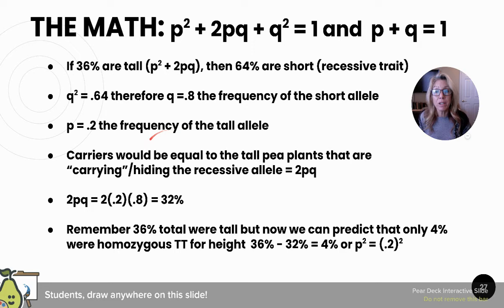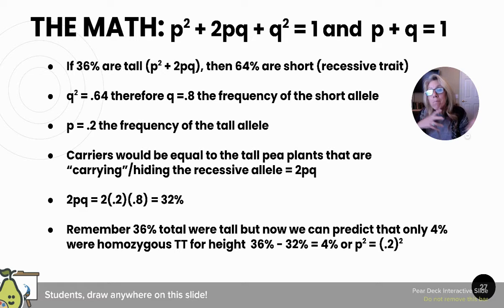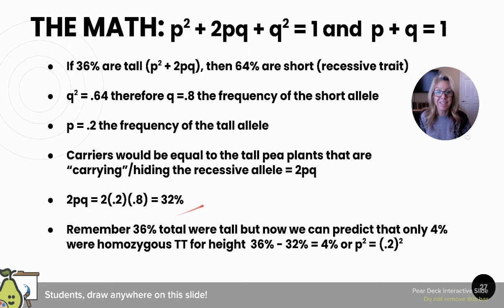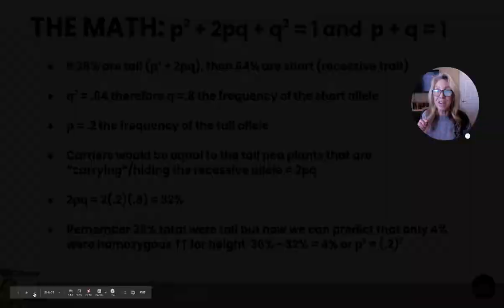Going back to the original question: how many are heterozygotes? That would be 2PQ = 2 × 0.2 × 0.8 = 32%. So of the 36% that were tall, only 4% were homozygous dominant (36 − 32%), and 32% were heterozygous. All those equations are down in your notes.